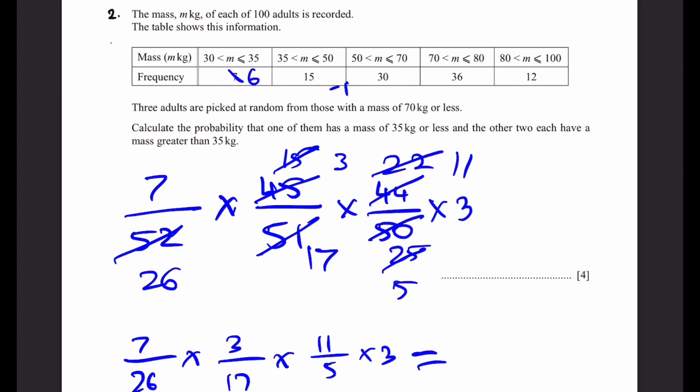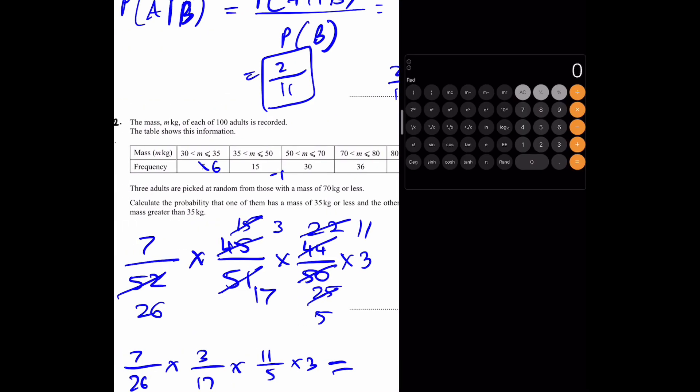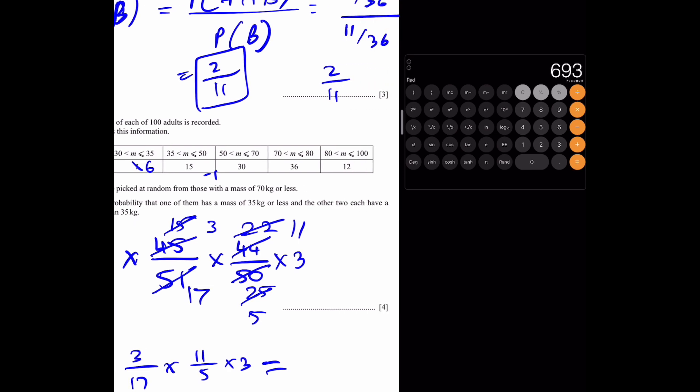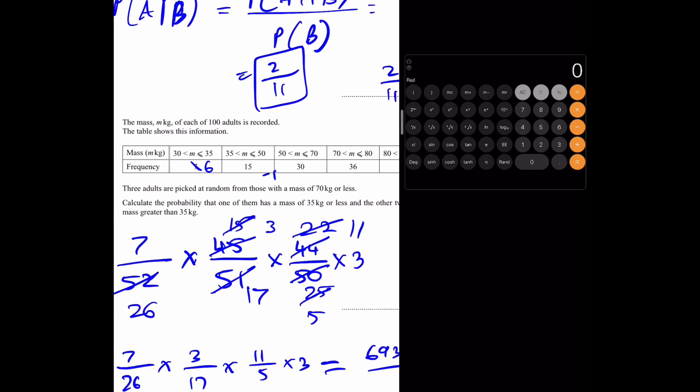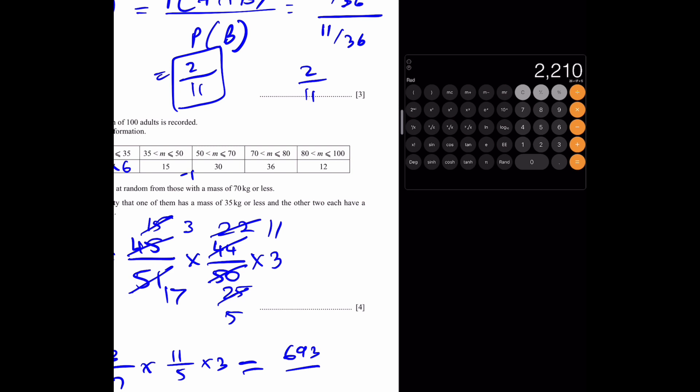And we can use a calculator to multiply the numerators and denominators. Let's get our calculator out. So, the numerator is multiplying, we get 7 times 3 times 11 times another 3 to get 693. And the denominators multiplying, we get 26 times 17 times 5 to get 2210. This is our final answer, since this is not able to be simplified more.